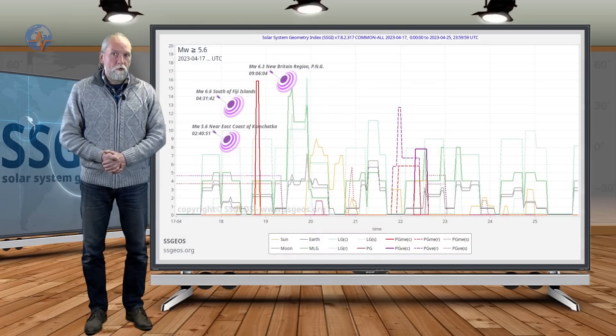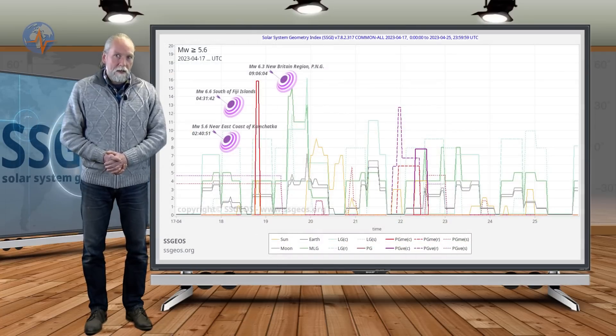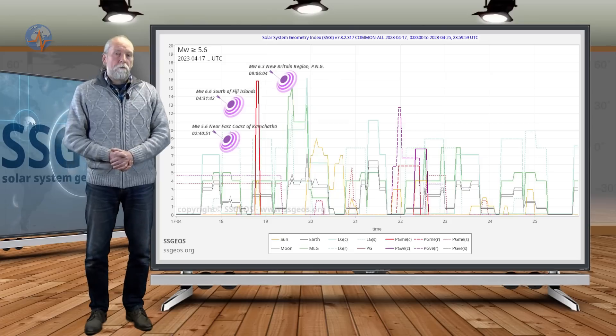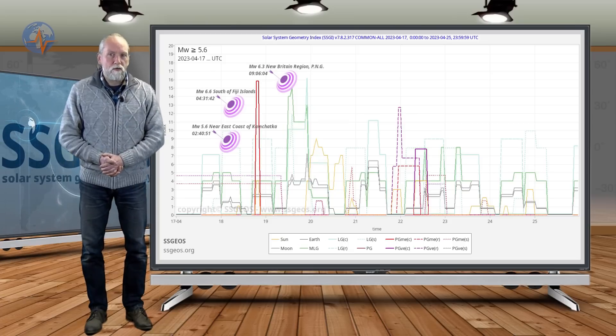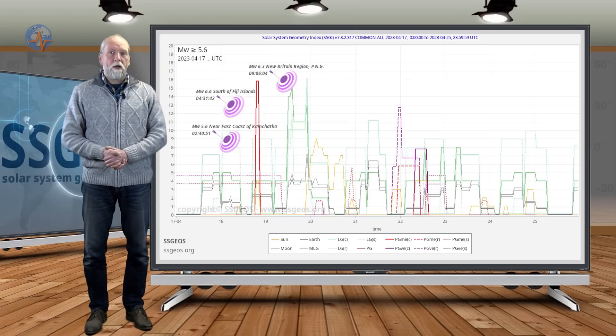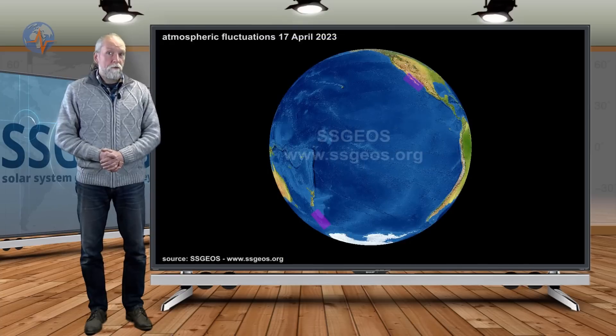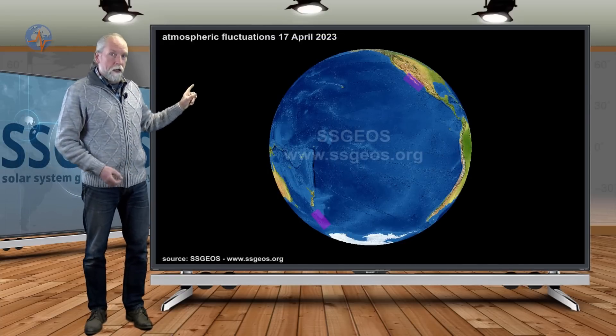A seismic increase may already happen later today as we approach the critical planetary geometry. I'd say around the 22nd this would match the atmospheric fluctuations that we picked up.